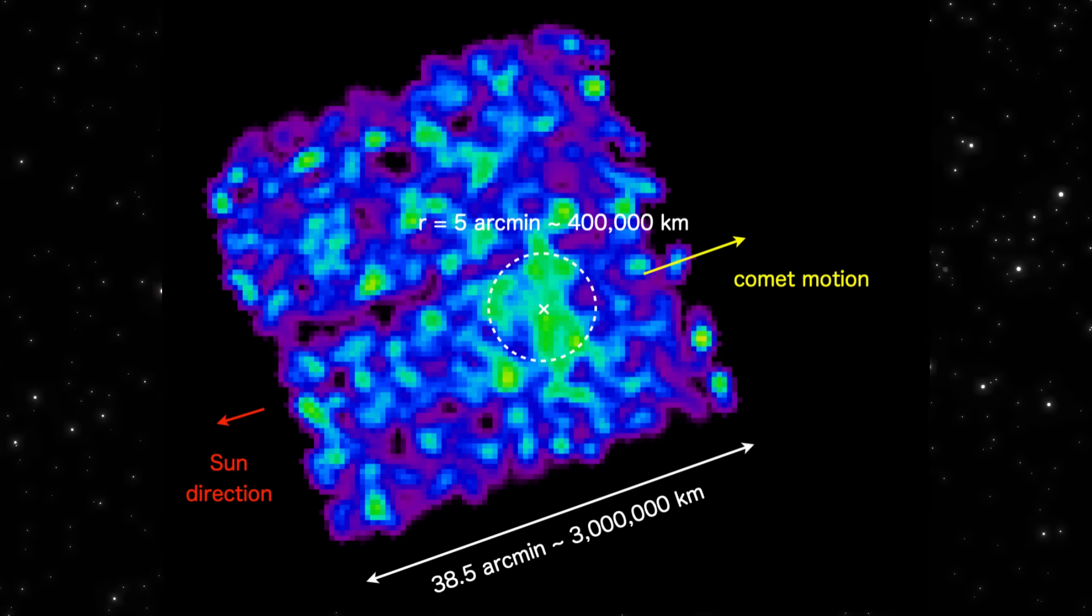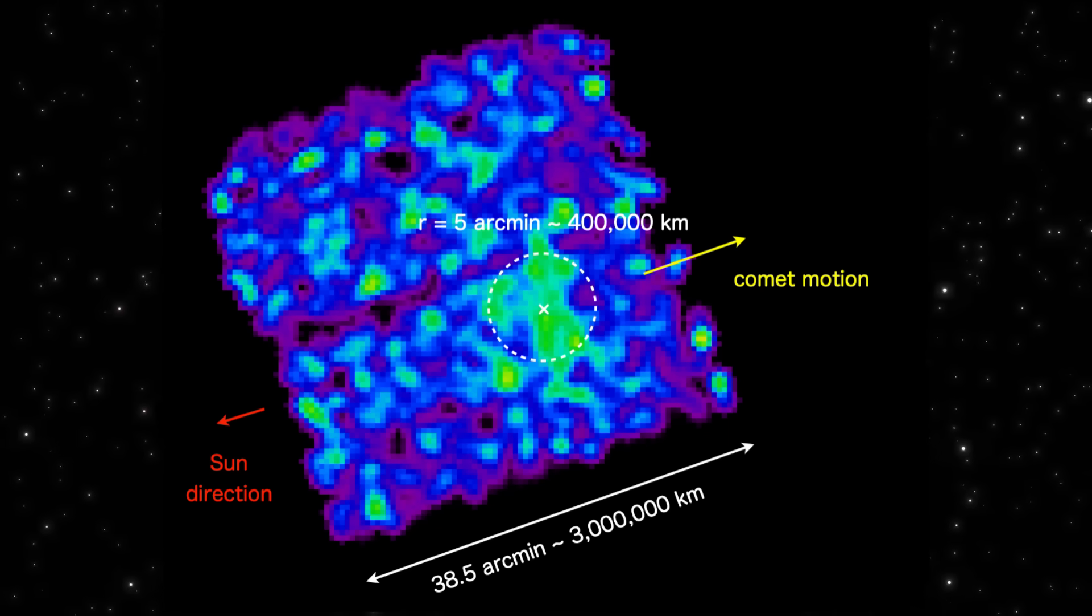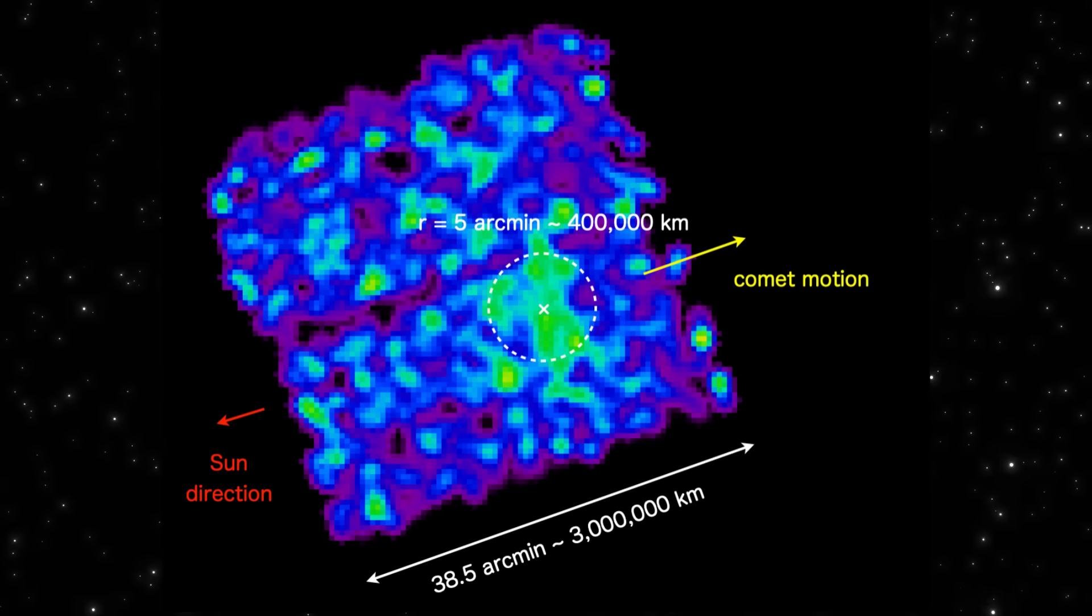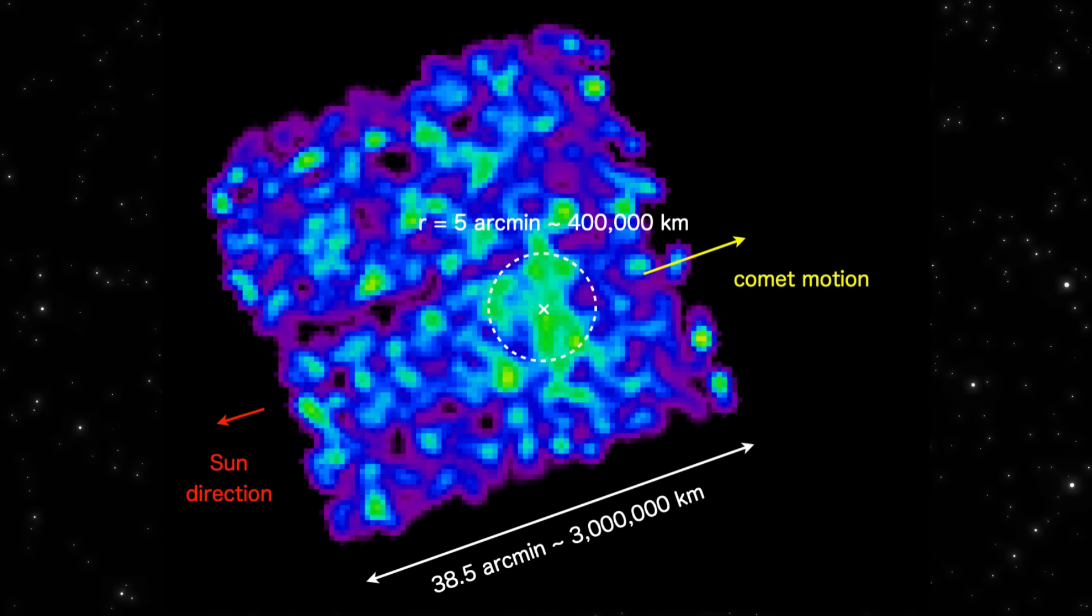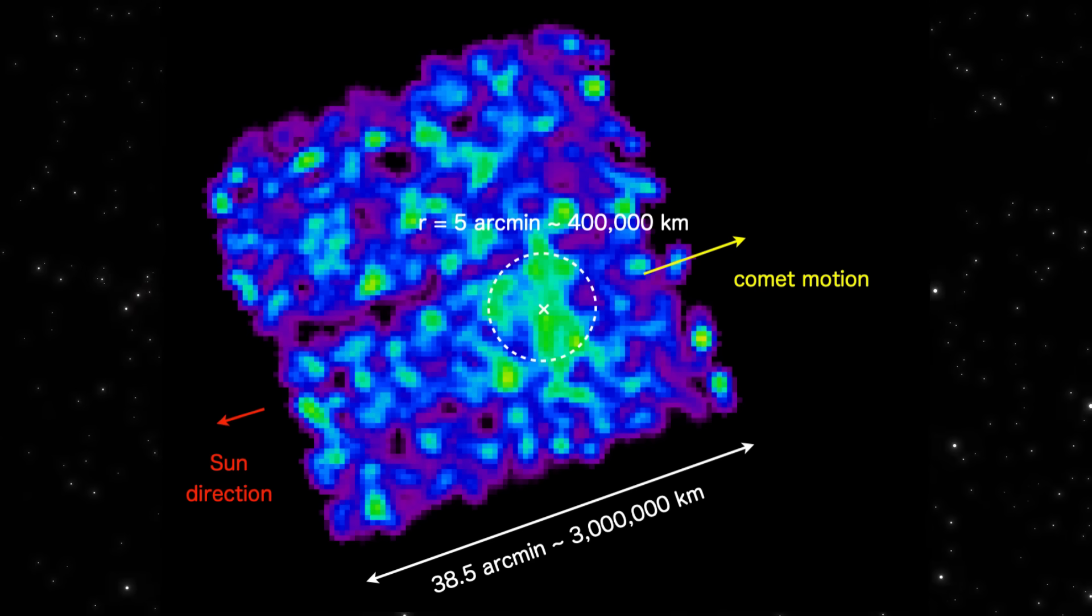No model predicts this kind of energy output. And look at the shape. It isn't aligned with the Sun the way normal solar-wind interactions are. It's asymmetric, displaced, and extended in directions that shouldn't produce X-rays at all.